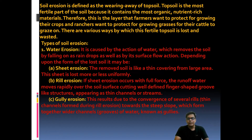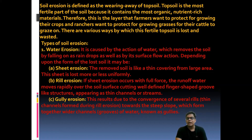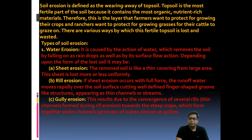When sheet erosion occurs with full force, the runoff water moves repeatedly over the earth's surface, and due to this, finger-shaped groove-like structures appear as thin channels. This is considered rill erosion — it is a finger-like, small type of erosion. This type of rill erosion can occur in fields during heavy or moderate rainfall.